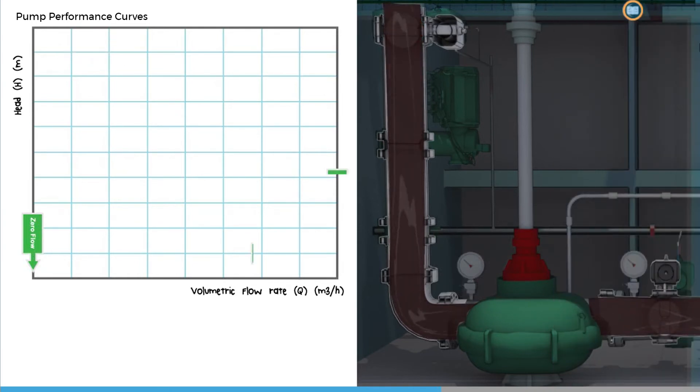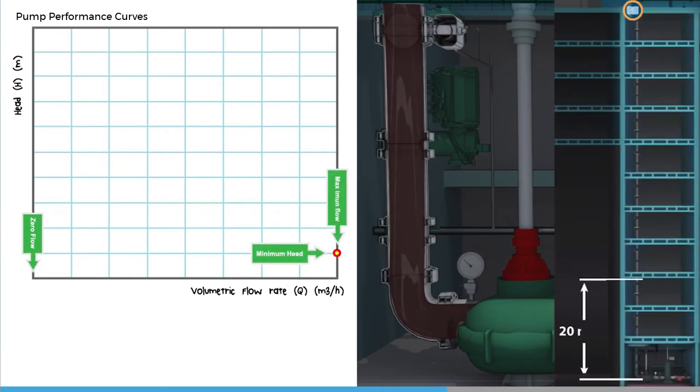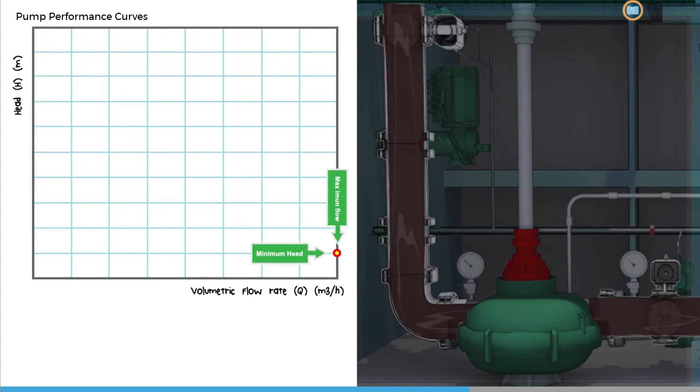The maximum flow occurs when head is at a minimum. This would be the case if the pump flow was totally unrestricted. Between these two points, there are a range of head conditions with corresponding flow rates.